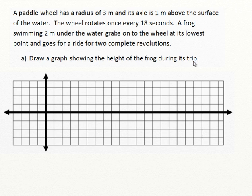I guess the first thing we need to do is get a visual representation of what's going on here. It says that a paddle wheel has a radius of 3 meters. So that means from its axle, it will be above 3 meters and below 3 meters. The axle is 1 meter above the surface of the water. We'll put that axle in right there, 1 meter above the water, and we'll make the grid here so that each square represents 1.